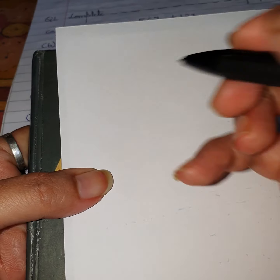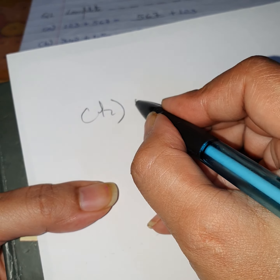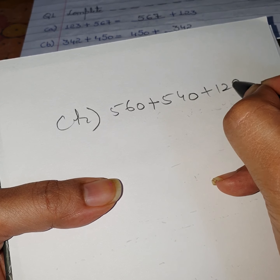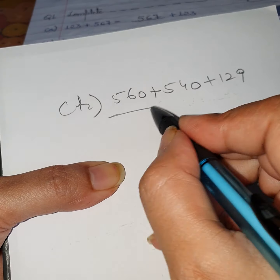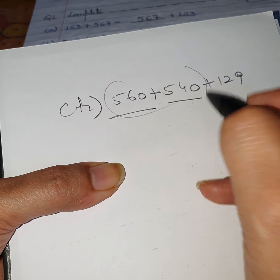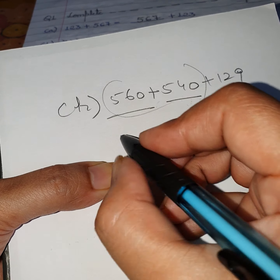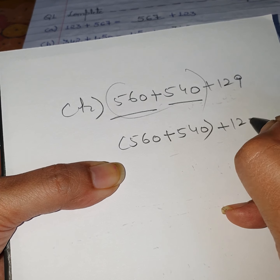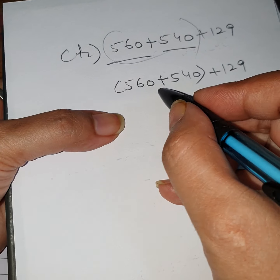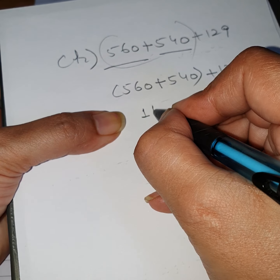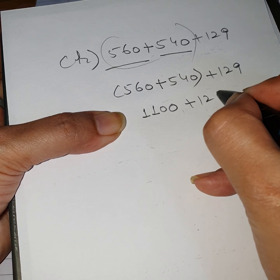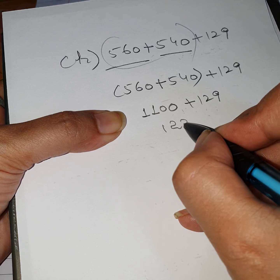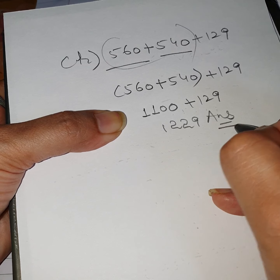Part H: 560 plus 540 plus 129. The first two numbers already have 0 at the last, so it is clear that these two go in one group. Take 560 plus 540 in one group and keep 129 separately. Adding 560 and 540 gives 1,100. Then add 129 to 1,100 to get the result 1,229. That is the answer of part H.